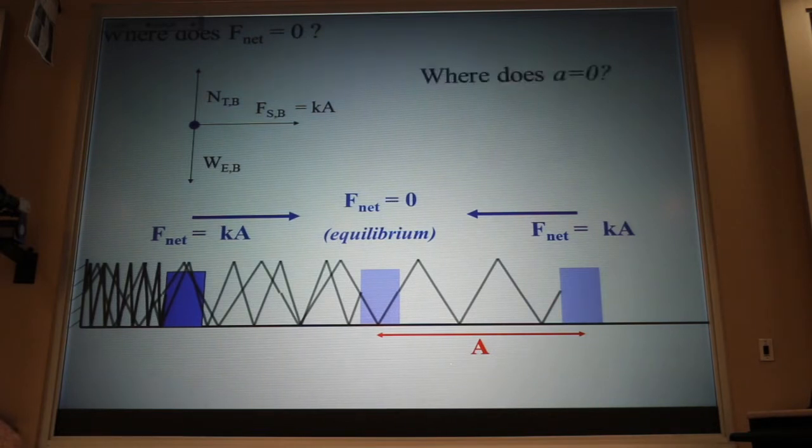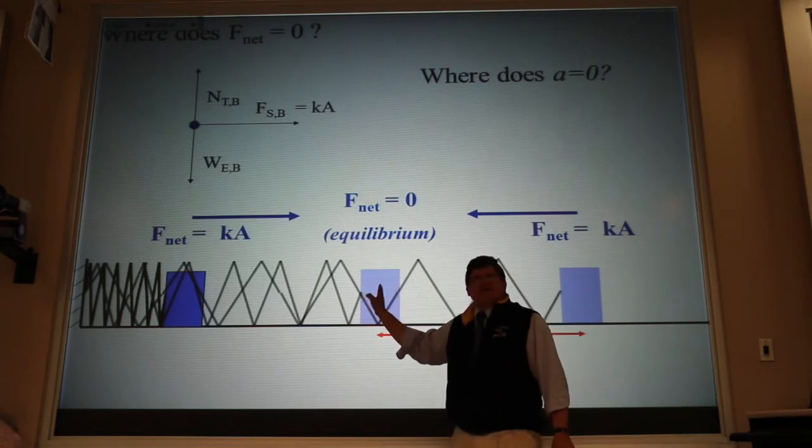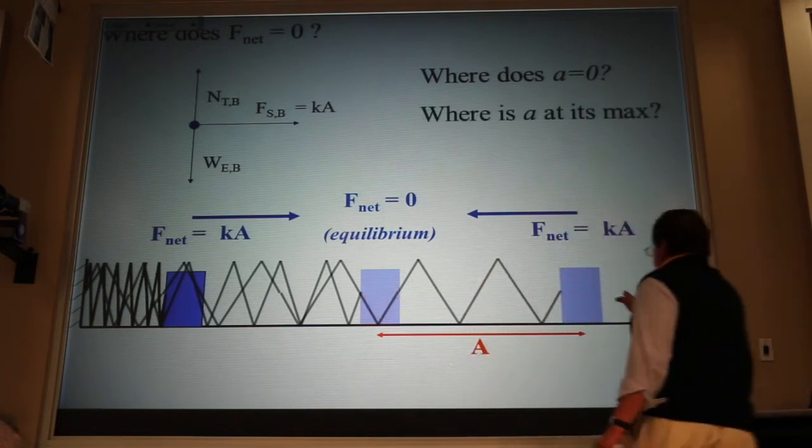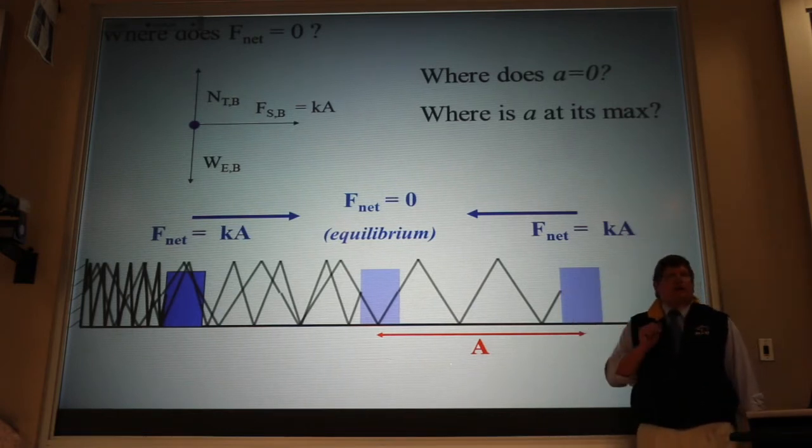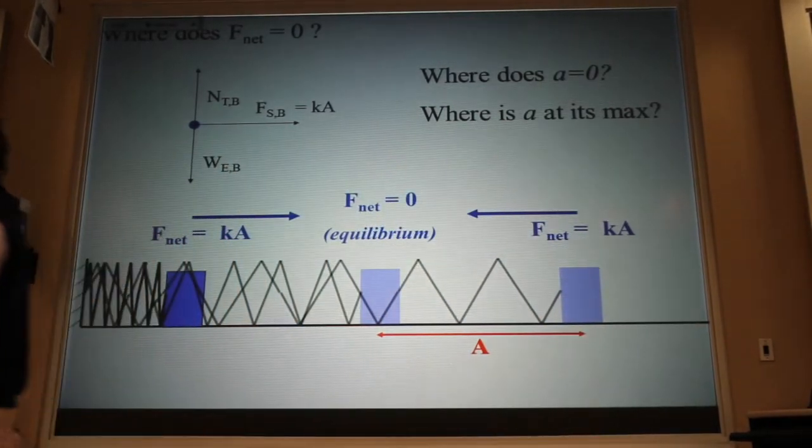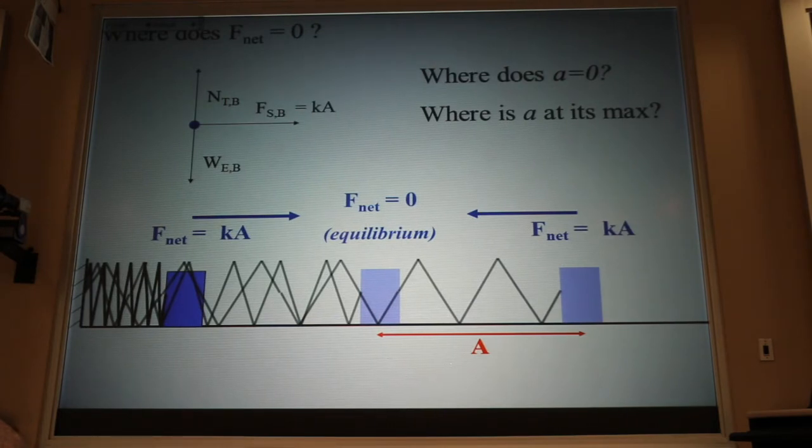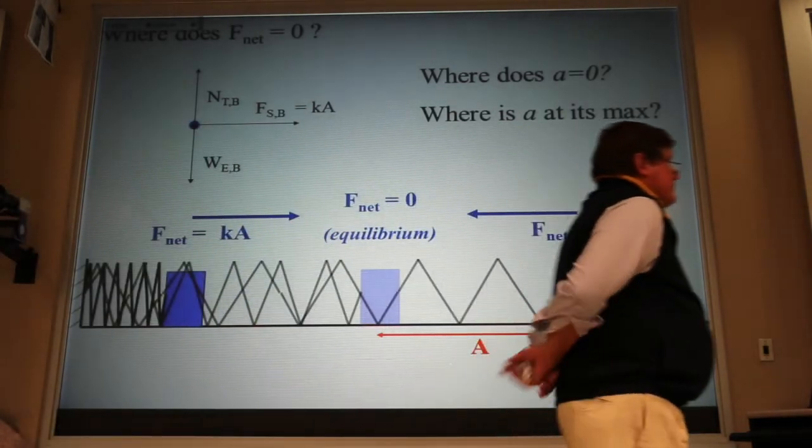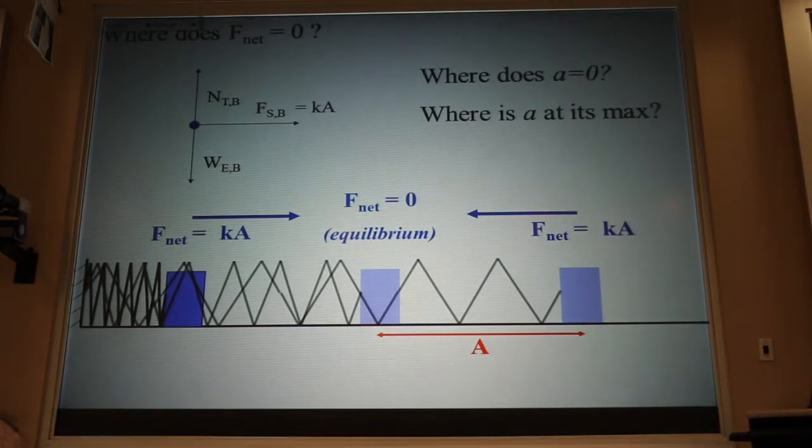What we find is that the acceleration is zero at the location where the block is moving the fastest. And the acceleration is maximum at the place where the block is not moving at all. And that's the answer to that first problem that you solved for today's homework that we did not turn in.